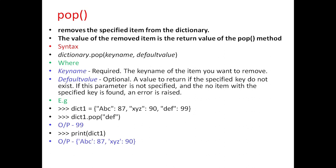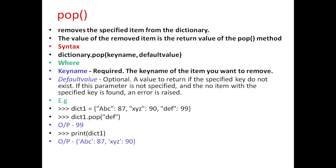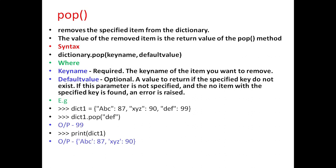Next is pop. This method removes the specified item from the dictionary. The value of the removed item is the return value of the pop method. The general syntax is dictionary.pop with parameters key name and default value, where key name is the required parameter which specifies the key name of the item that you want to remove, and default value is an optional parameter which specifies a value to return if the specified key does not exist. If this parameter is not specified and no item with the specified key is found, it will raise an error.